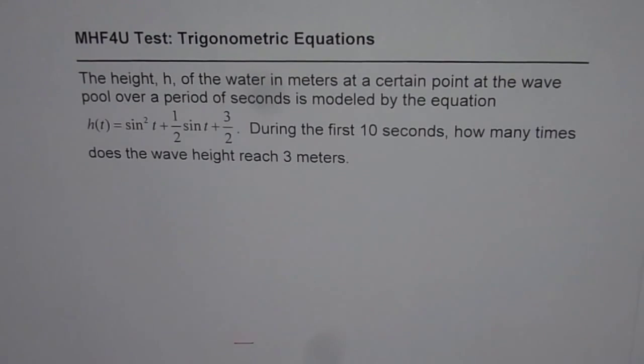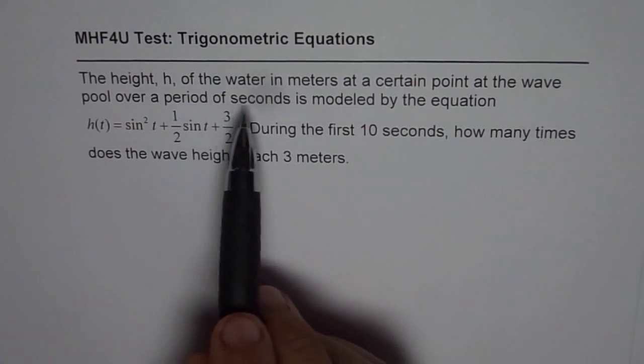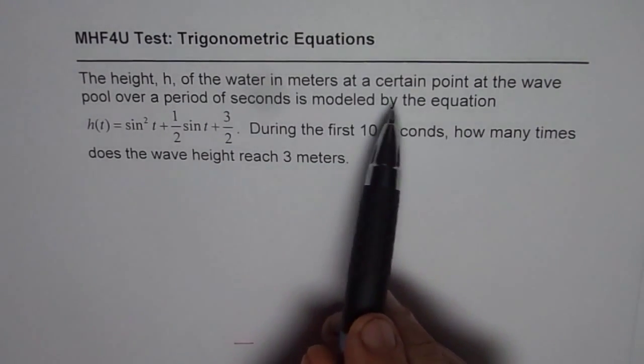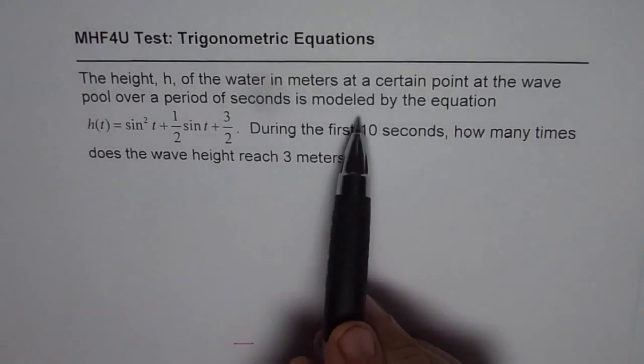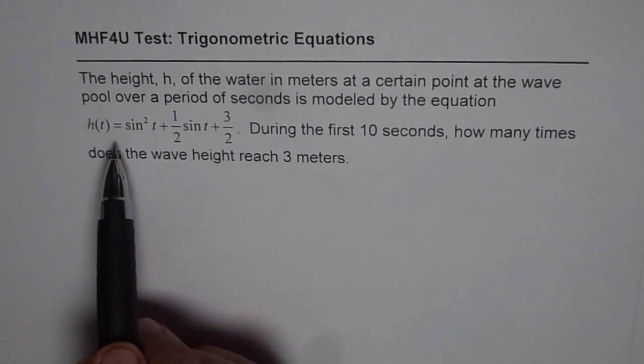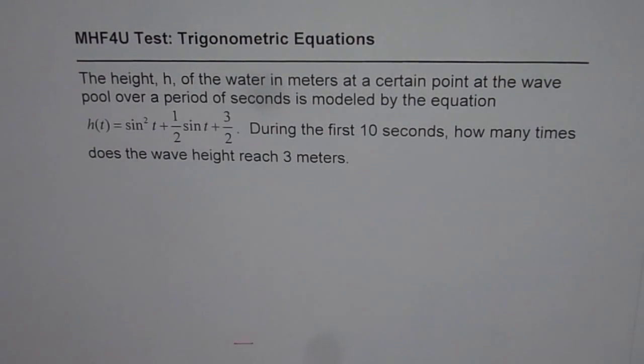The question here is, the height h of the water in meters at a certain point at the wave pool over a period of seconds is modeled by the equation h of t equals 2 sin square t plus half sin t plus 3 by 2. During the first 10 seconds, how many times does the wave height reach 3 meters?